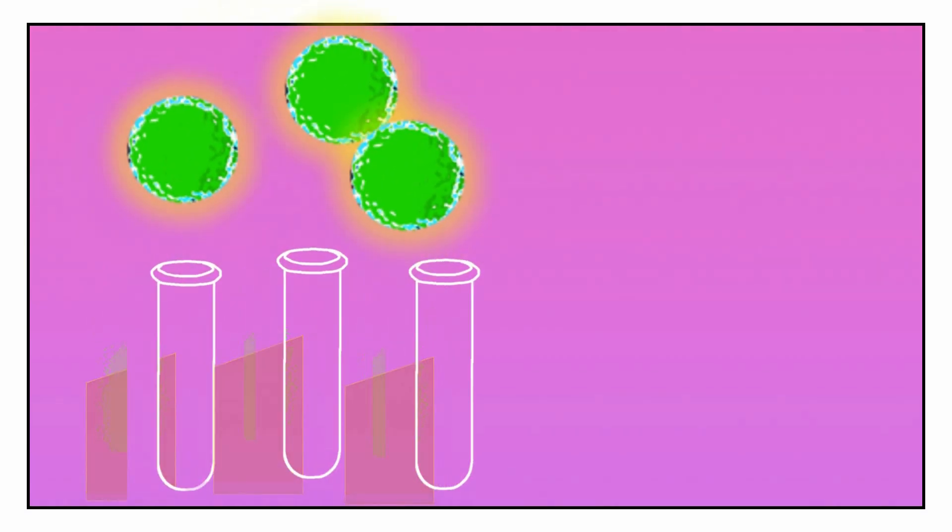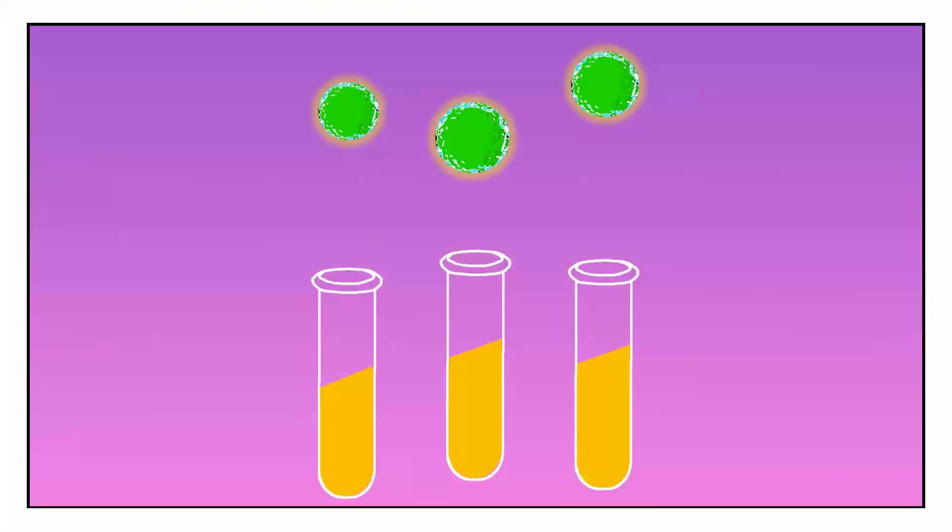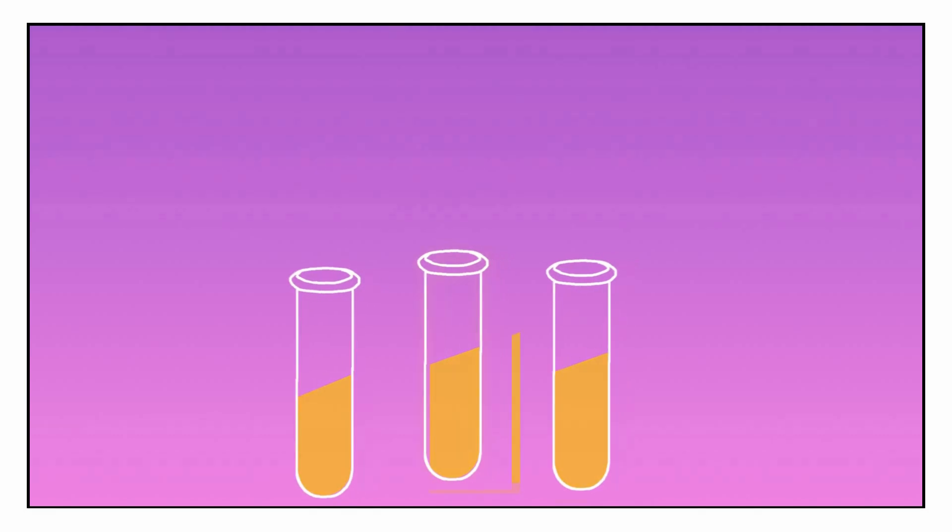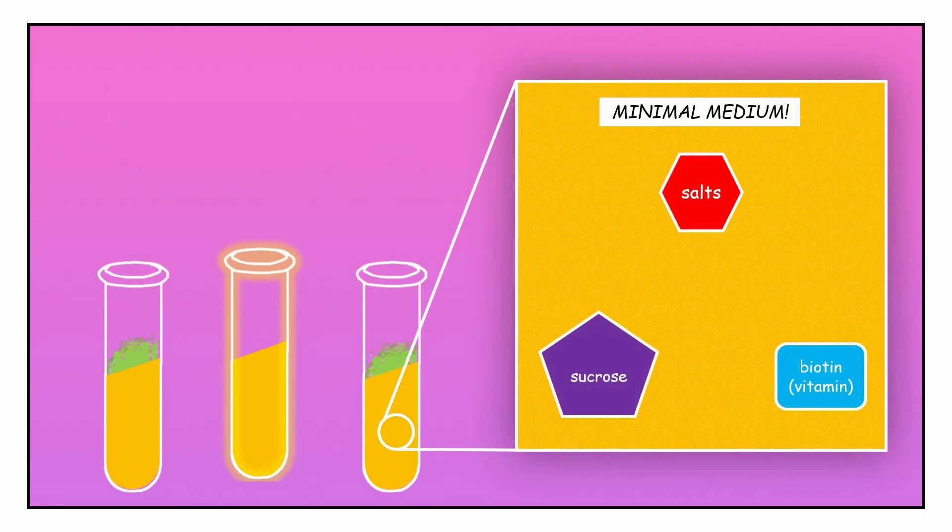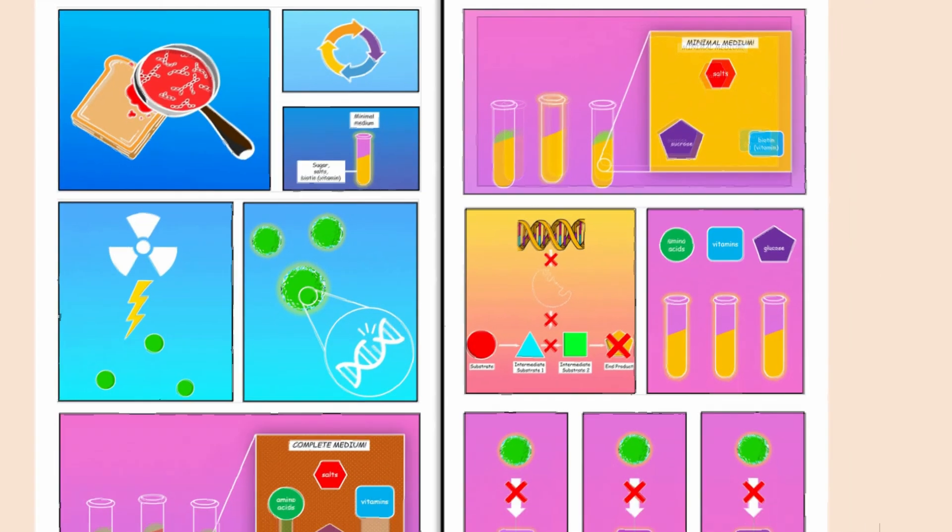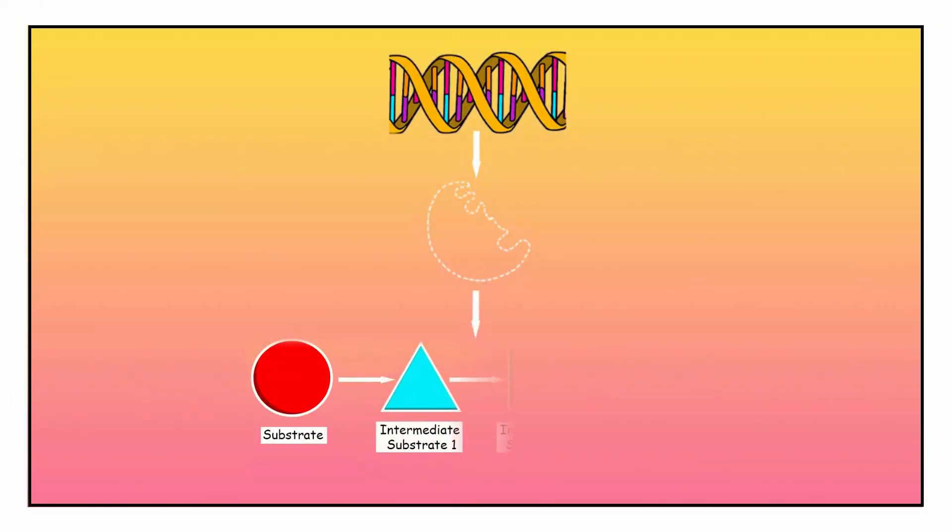However, when transferred to the minimal medium that required the mutants to make these products themselves, some could not grow. But why? Turns out the mutations prevented these mutant strains from being able to produce an important molecule to perform necessary chemical reactions.